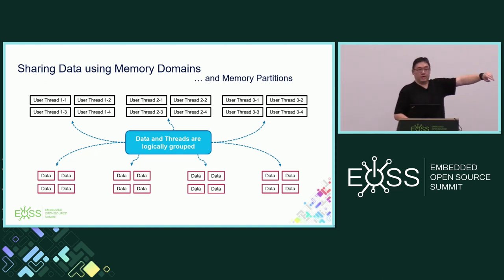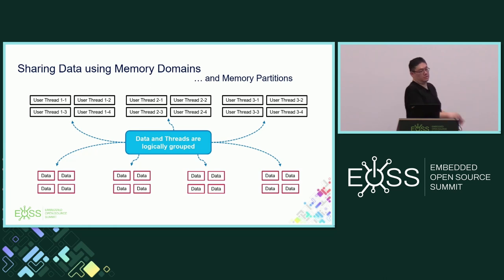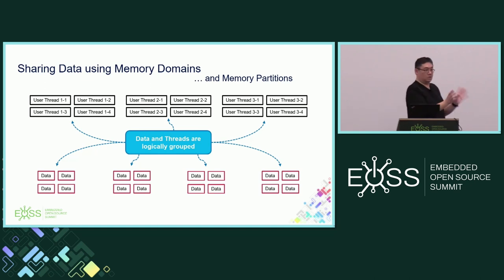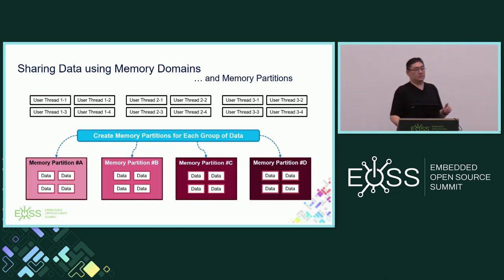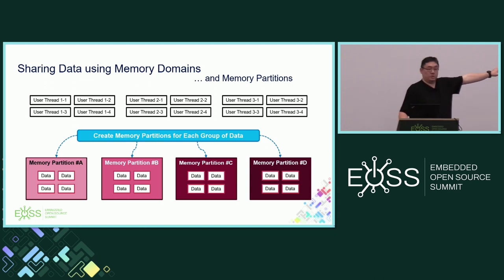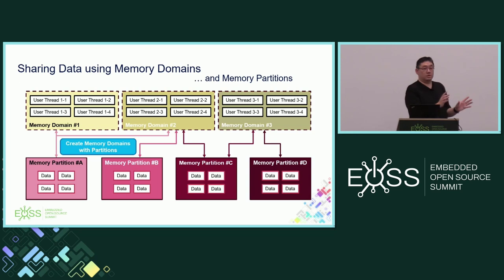So how do you share data between user threads? Say you have three groups of threads and four groups of data that are logically partitioned. For example, you have data coming from one sensor and another set of data from another sensor, and a group of threads processing data from both sets. The process of sharing is mostly done at build time. The first step is to assign data to memory partitions — for example, memory partition A holds one piece of data, partition B, C, and D, and so forth.